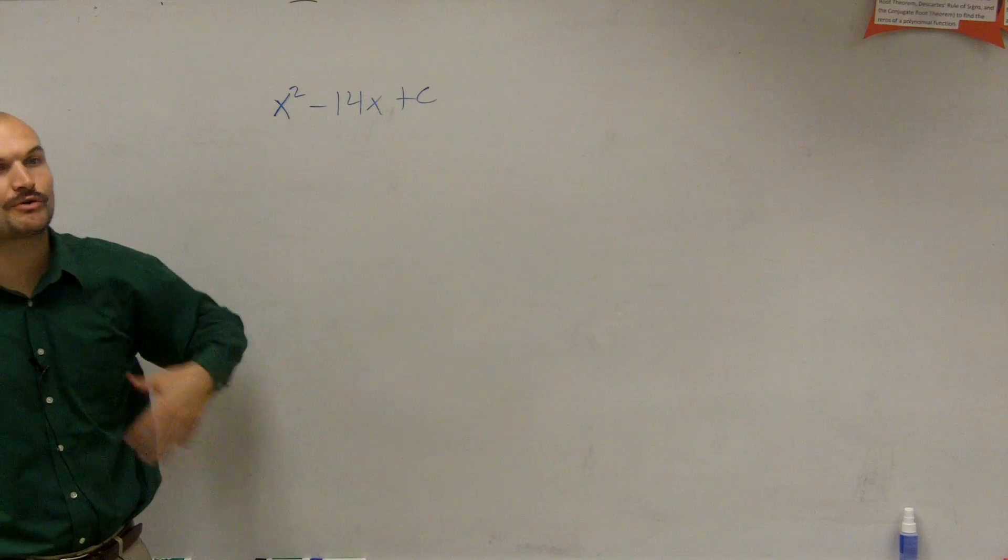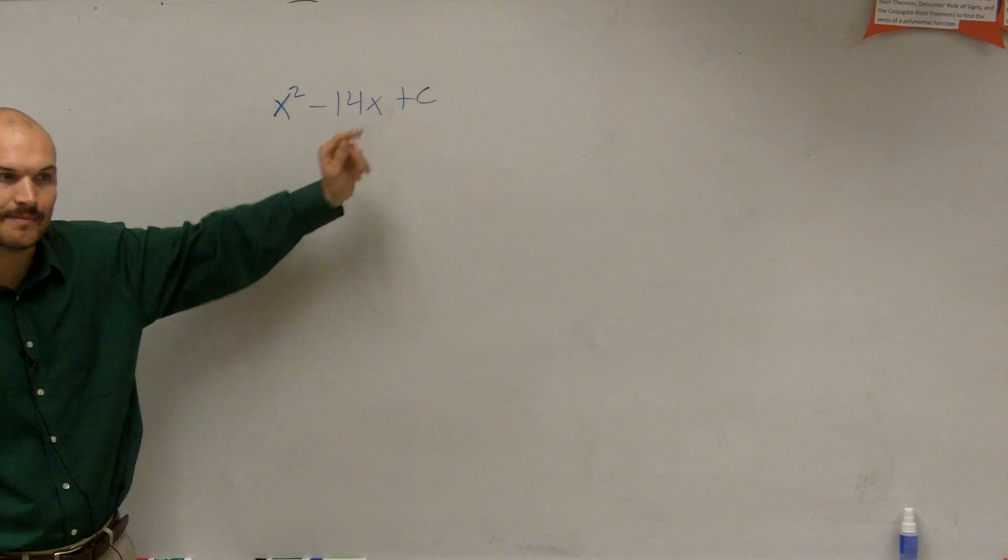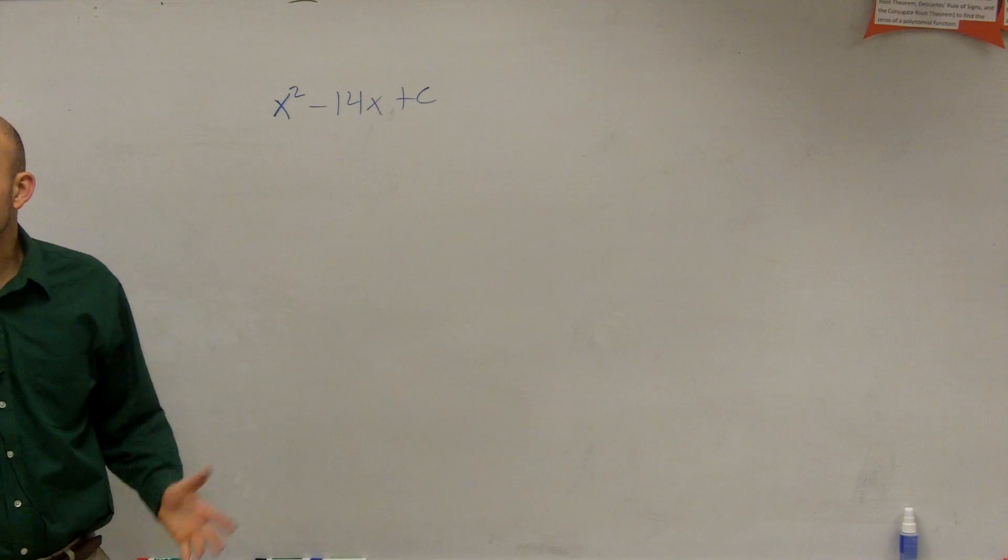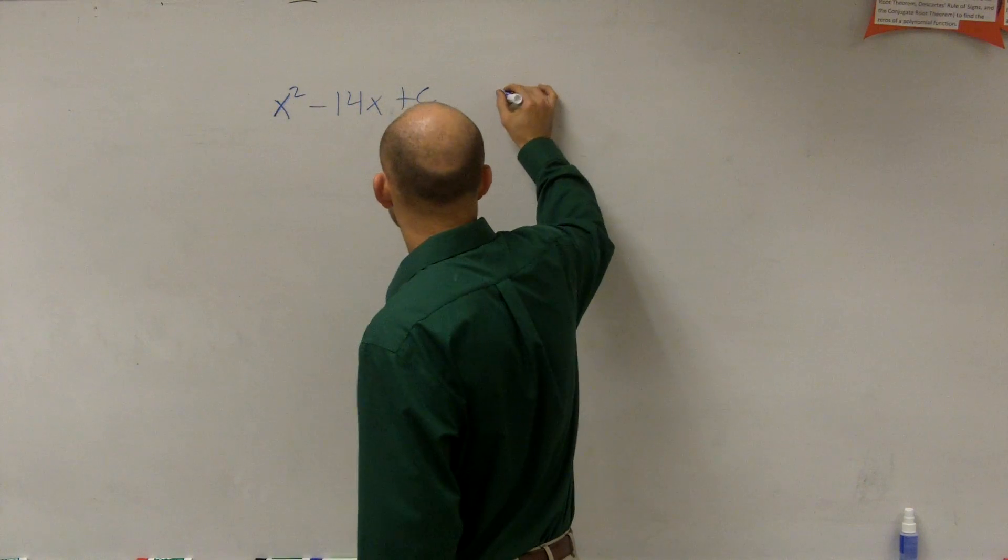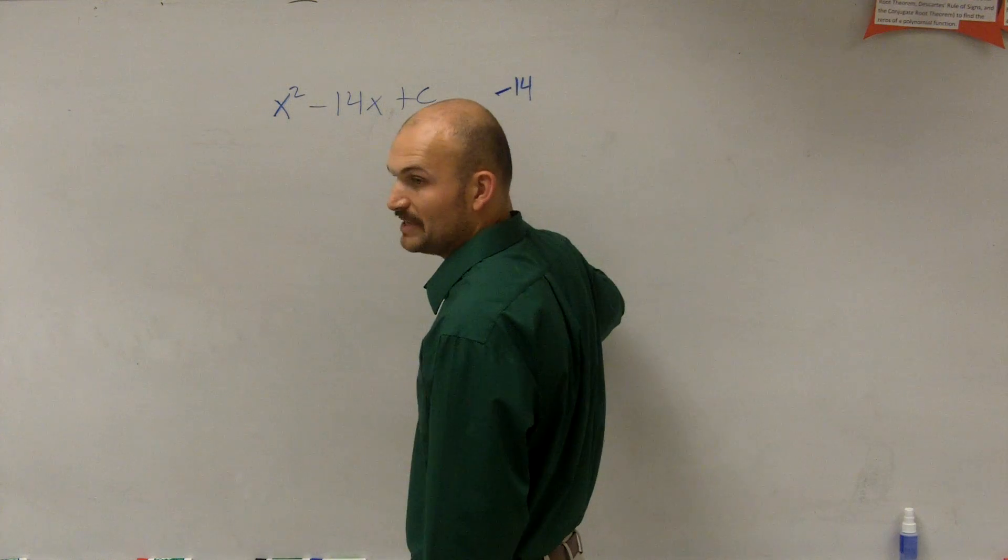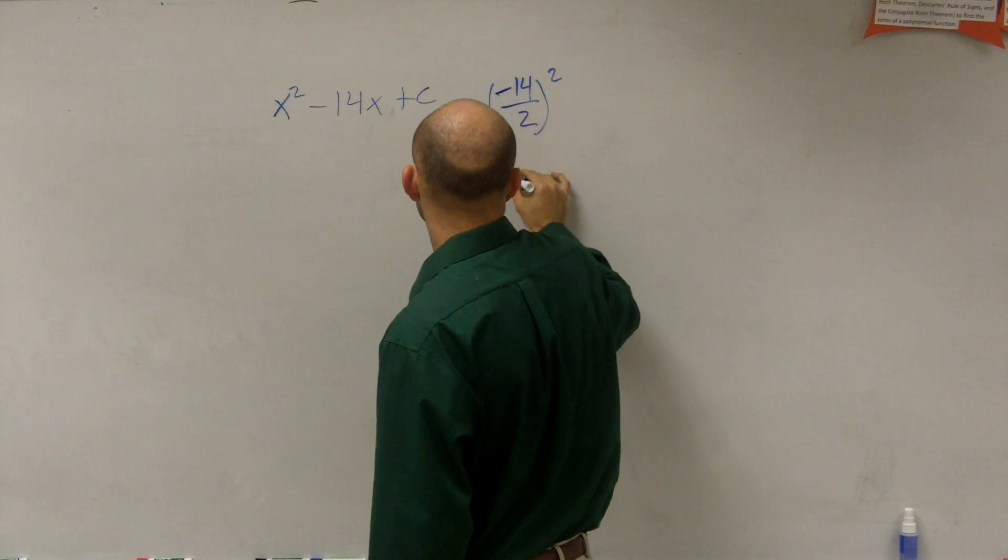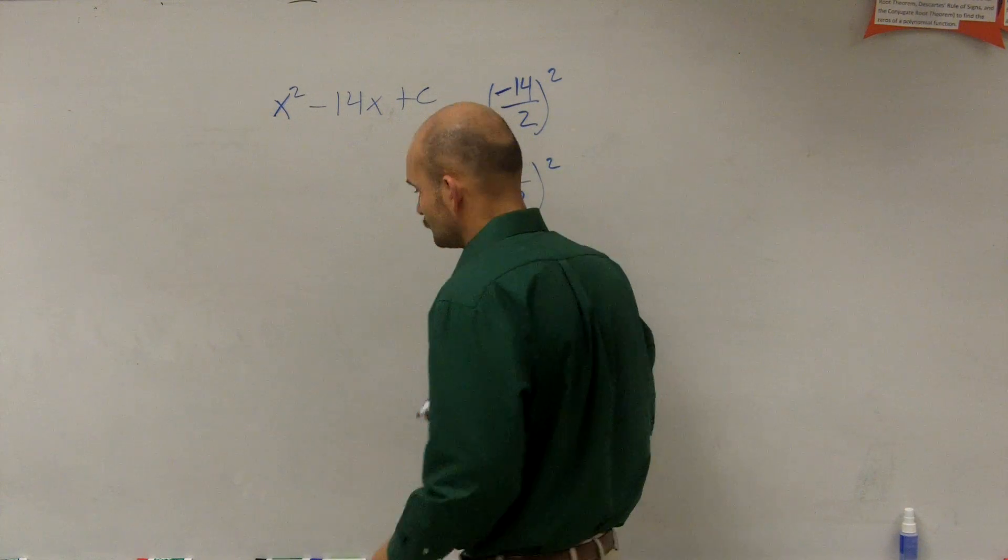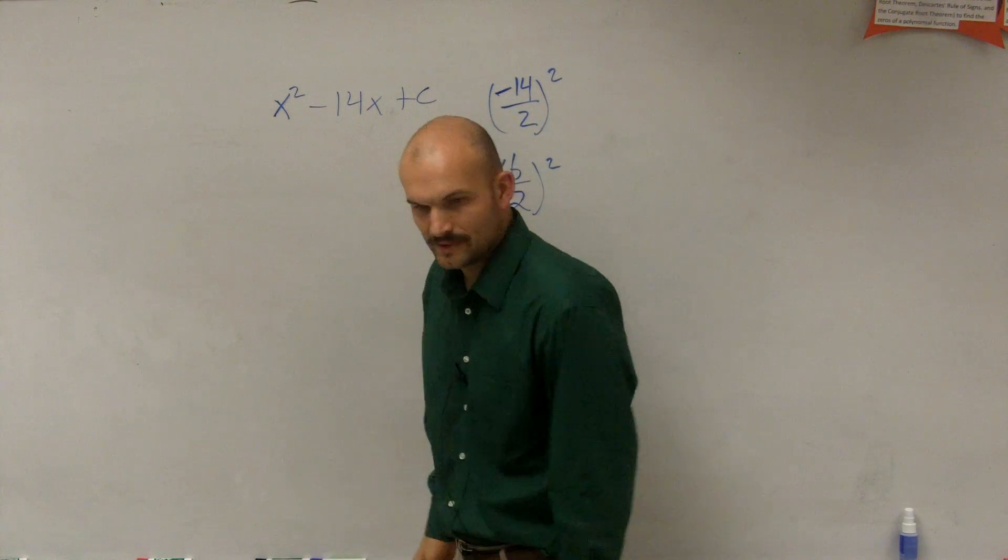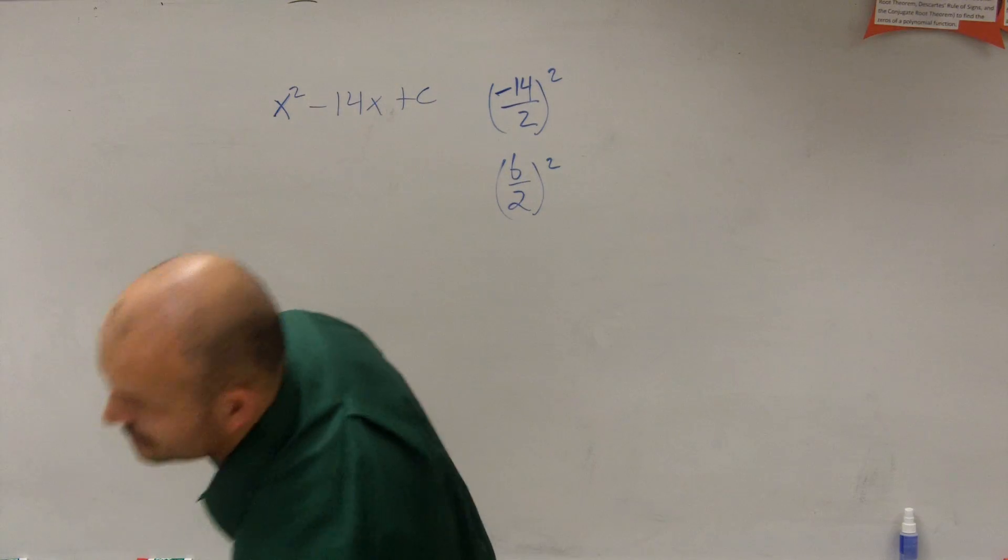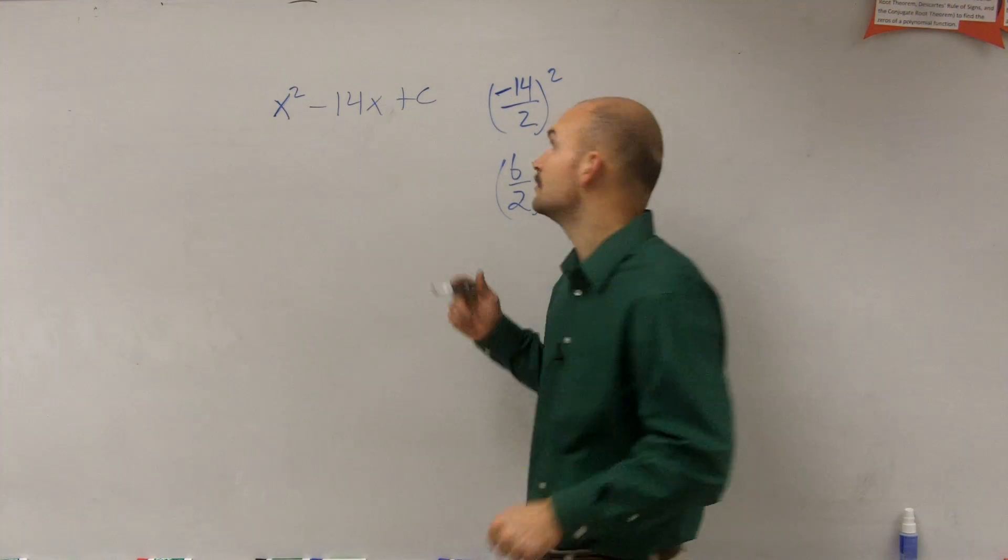So what they want us to do is create the number for c that would make this a perfect square trinomial. To find that, we don't need to guess and check. All we need to do is take your b, divide it by 2, and square it. So when we take b divided by 2, negative 14 divided by 2 is negative 7. Negative 7 squared equals 49.